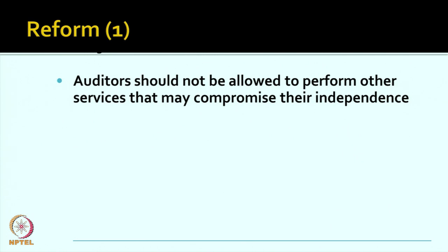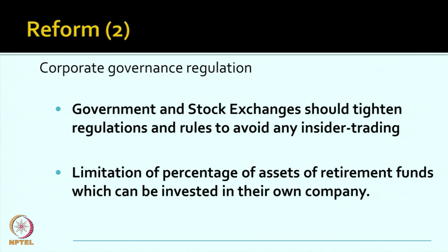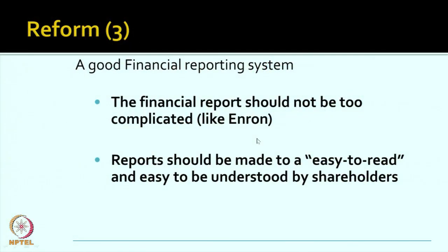After this, many reforms were suggested. Auditors should not be allowed to perform other services because it compromises their independence. Governments and stock exchanges need to tighten their rules to avoid insider trading, as people at the helm of Enron were also involved in insider trading. The percentage of retirement fund assets that can be invested in their own stock also needs to be checked. There is a need for better accounting and financial reporting systems — Indian formats are much more transparent compared to US formats, and now the US has also changed their format to make balance sheets, P&L, and cash flows easier to read.